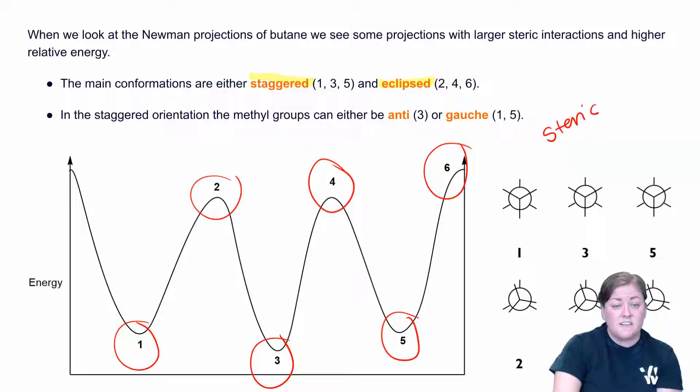And this is due to something called steric repulsion. Steric repulsion is a result of physical space occupation. So these are groups physically occupying the same space. When we have groups sitting on top of each other, they repel each other because they are occupying the same space. And that's why these are higher energy configurations.